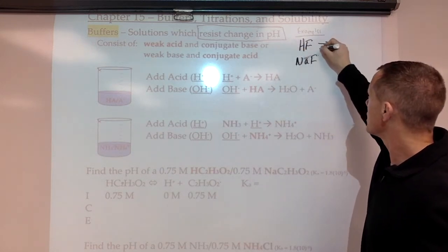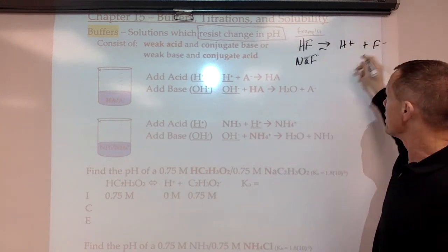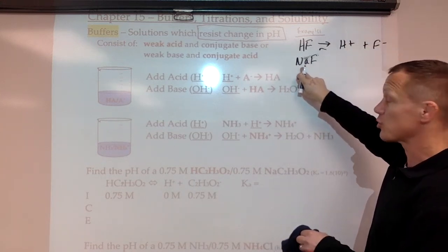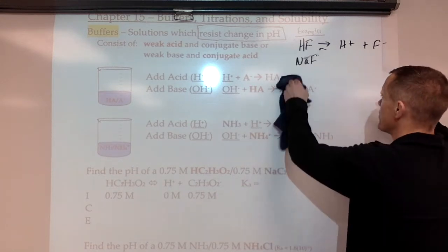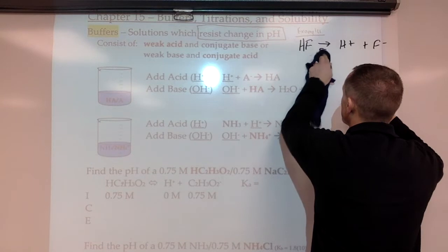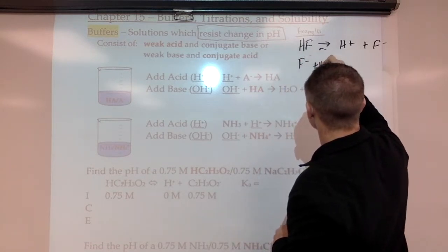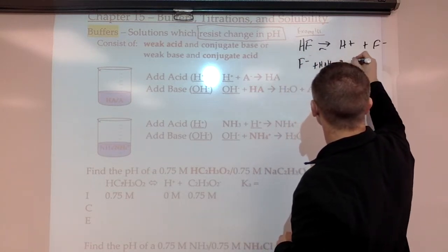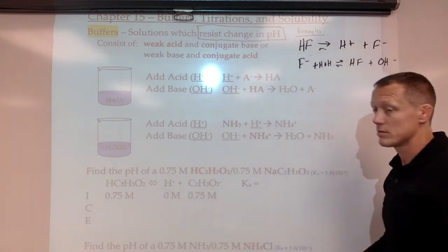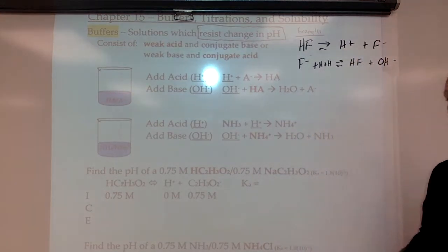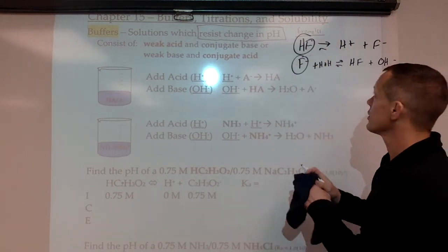So sodium fluoride makes F- ions. The sodium ions in solution do not affect pH, but the fluoride ions do affect pH. So then we have some fluoride ions interacting with water. We've got a weak acid and its conjugate base put into solution.